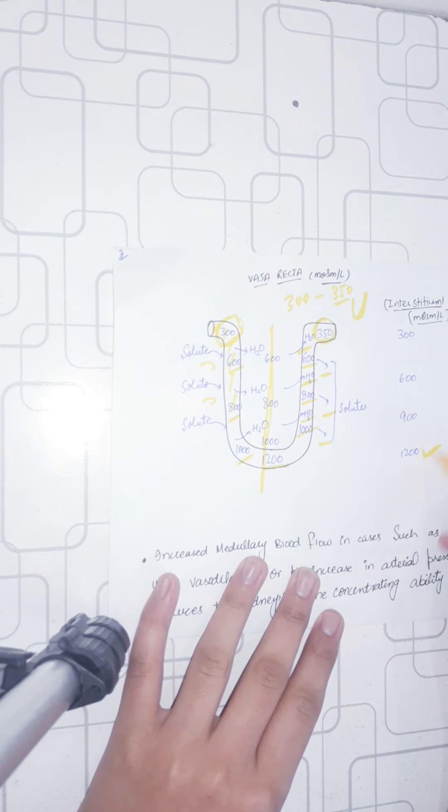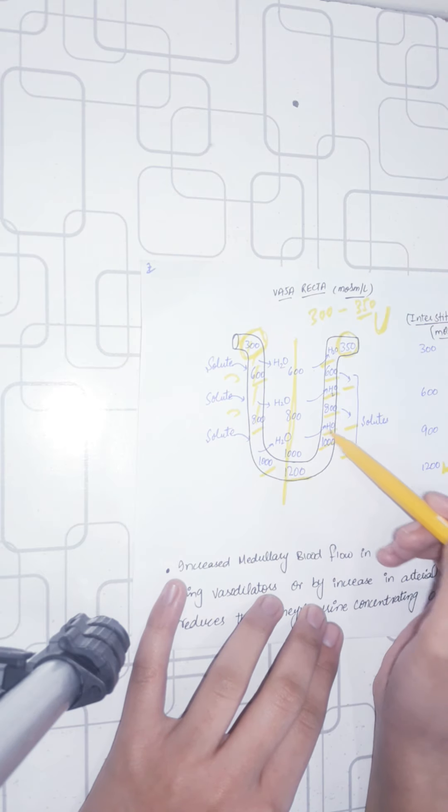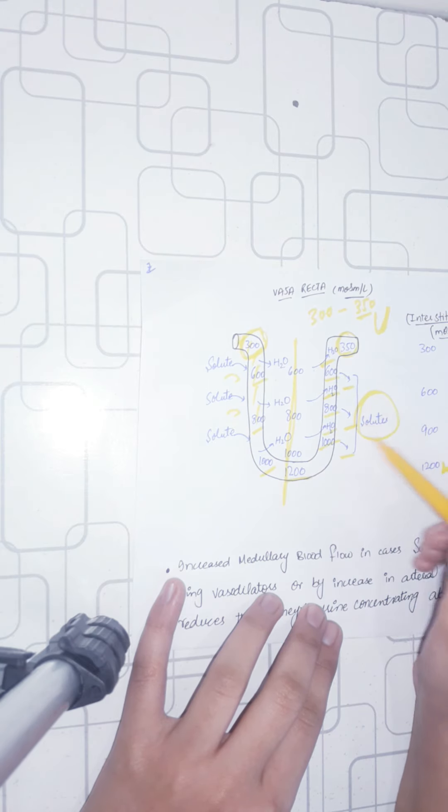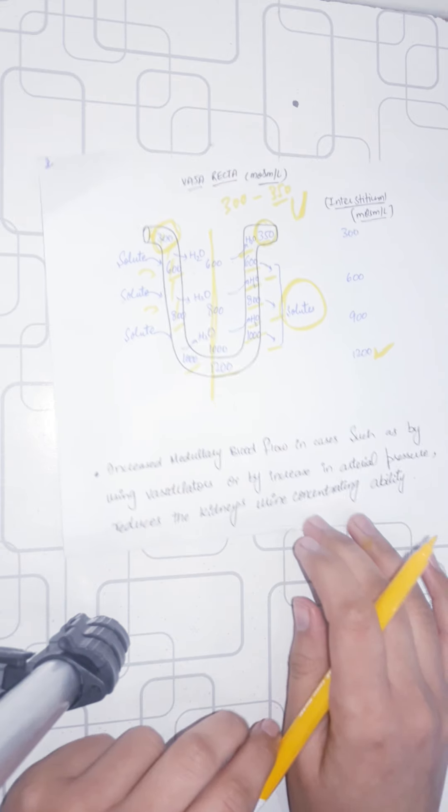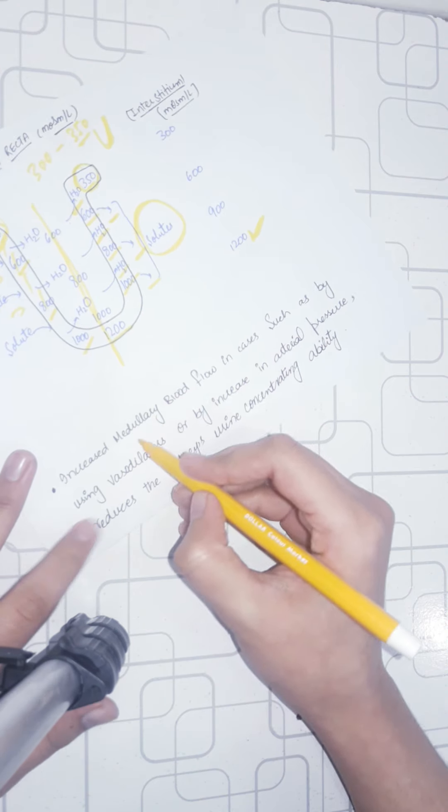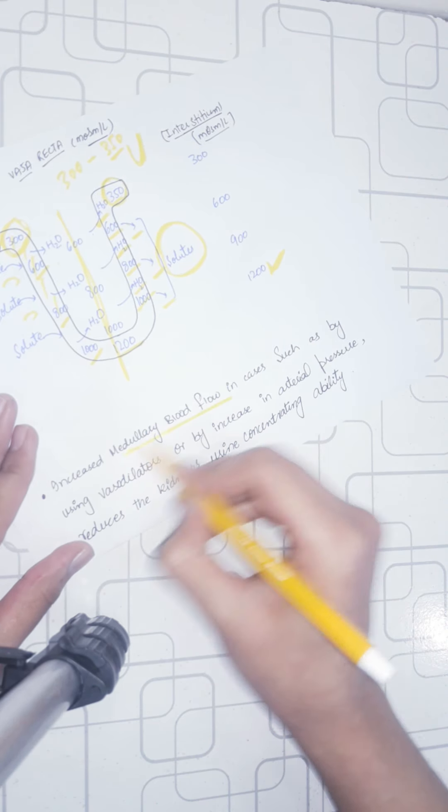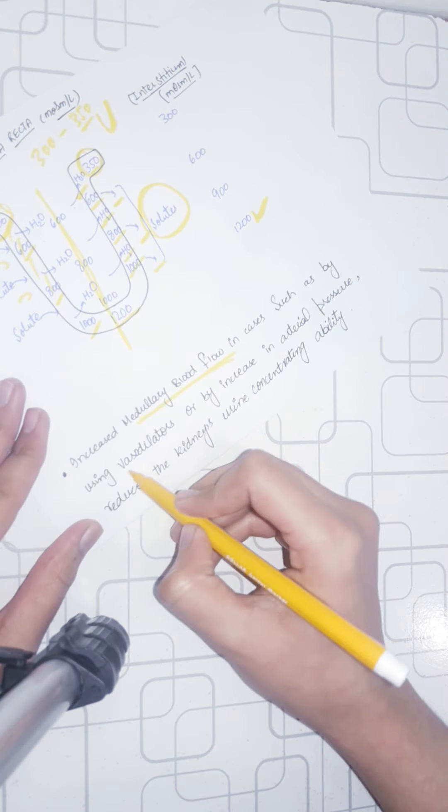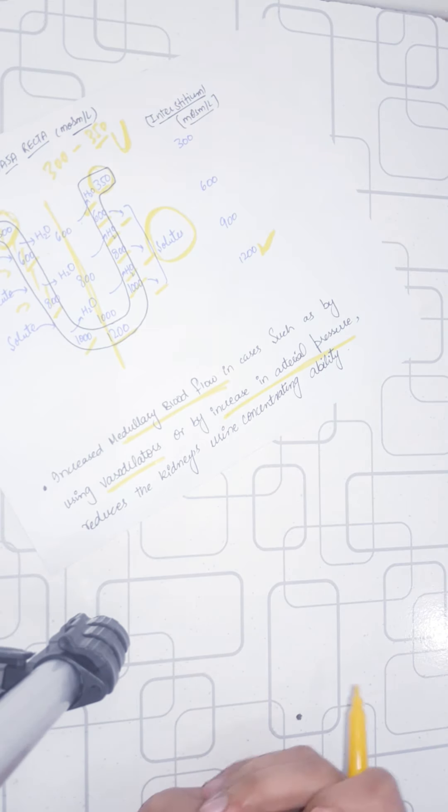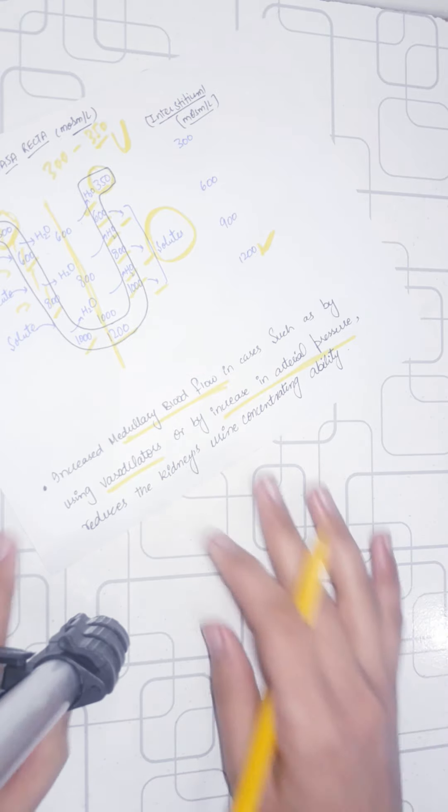This hyperosmolarity is maintained because the solute that entered is going back. The important thing is that blood flow is less - medullary blood flow is sluggish. But if we use vasodilators or increase arterial pressure, medullary blood flow increases. When blood flow increases, the solute will wash out.